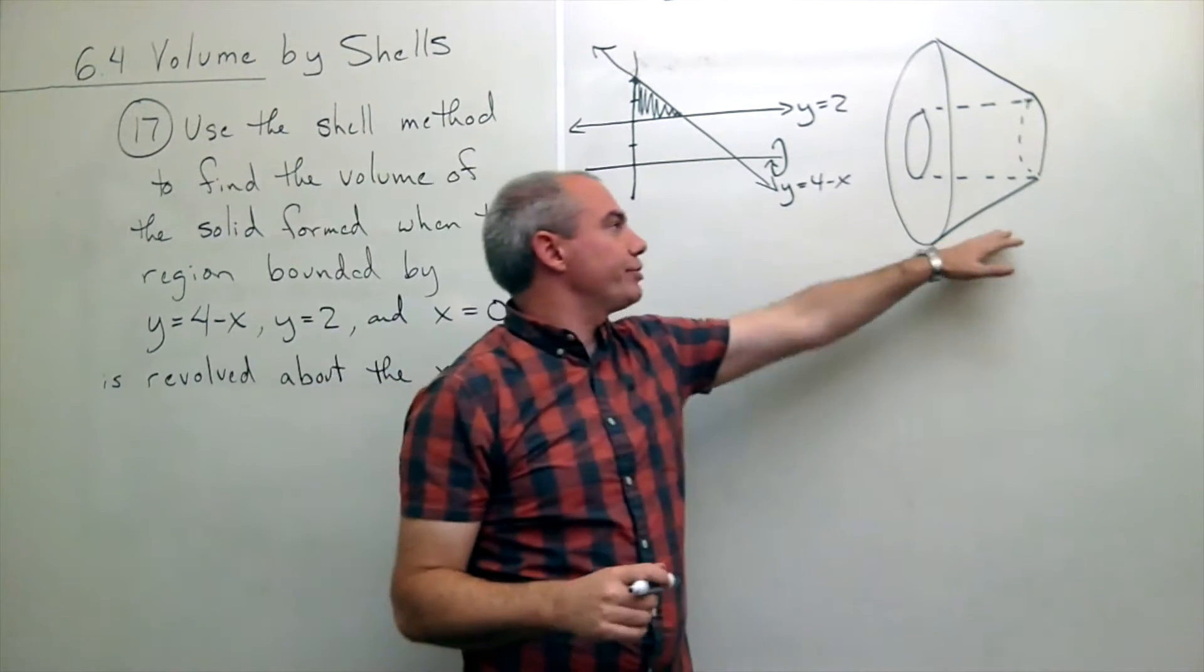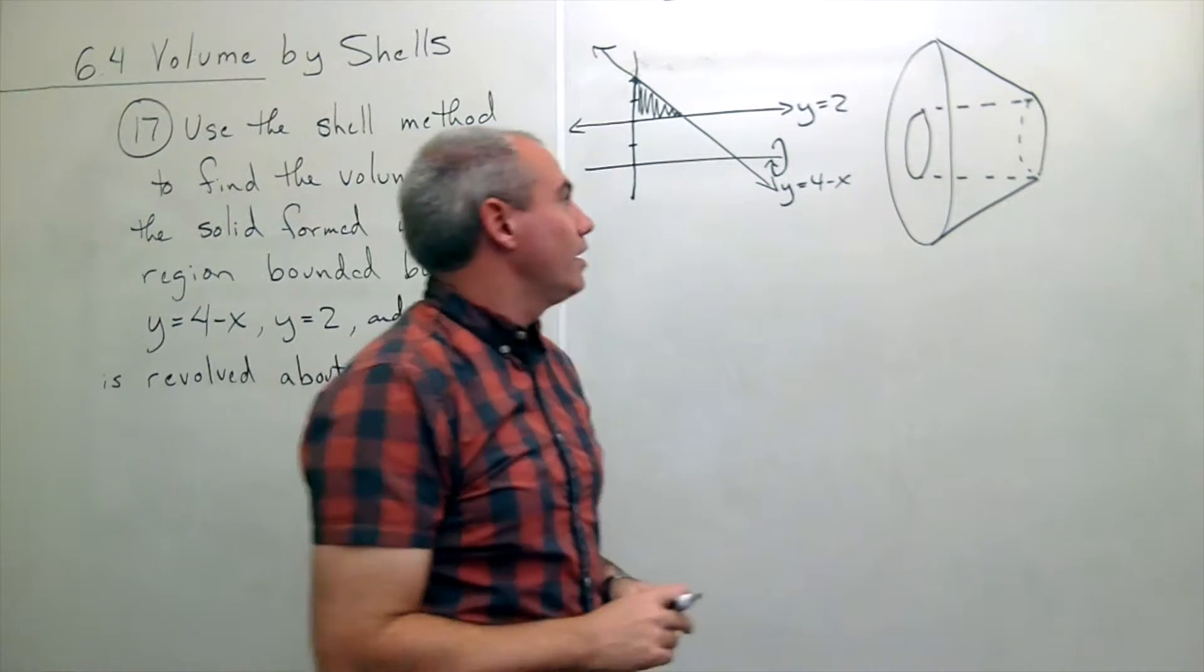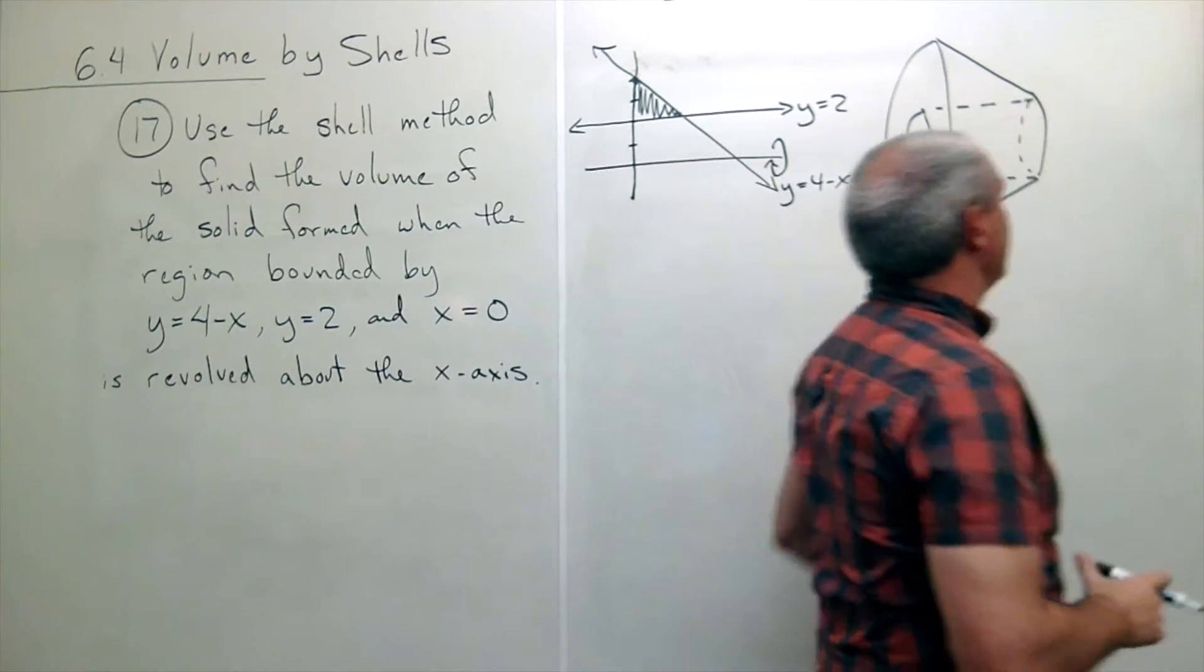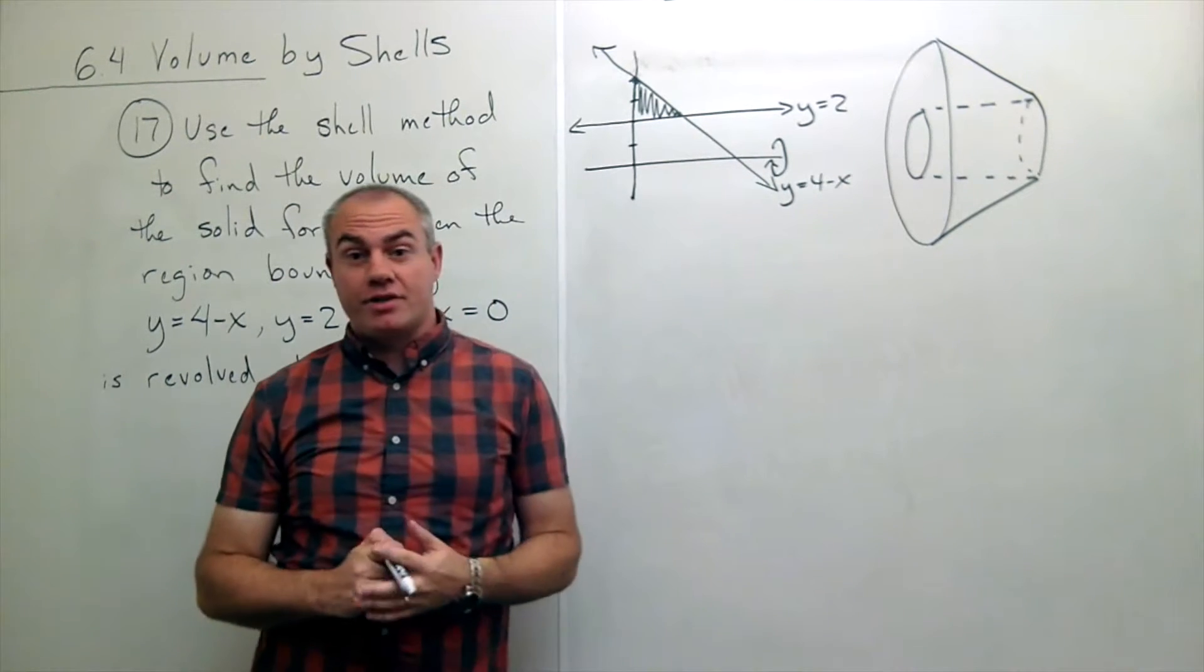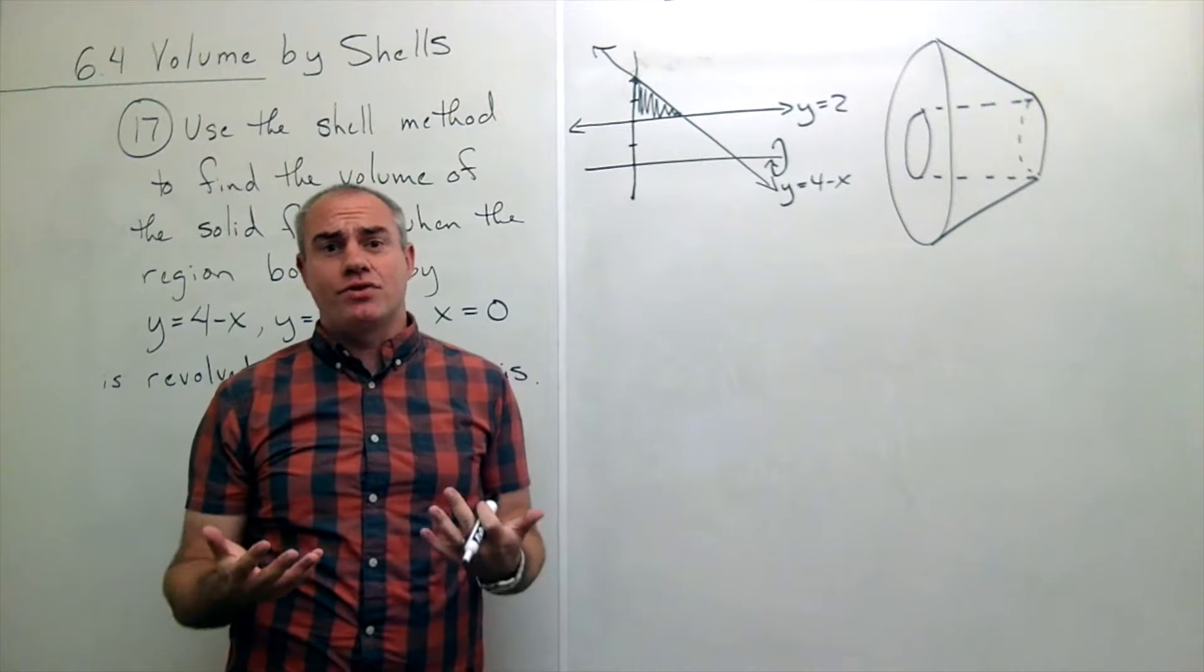Okay, so we get a picture of what our shape is looking like. We can see in one sense all the cross sections are washers if we look at it one way, and so you might ask the question, well, can I just use the washer method?